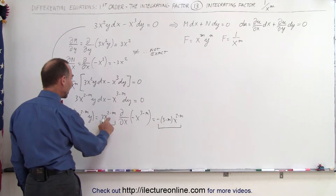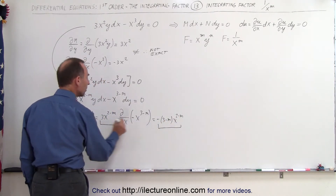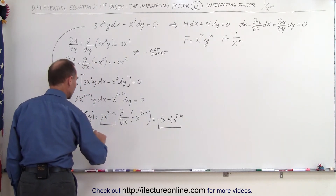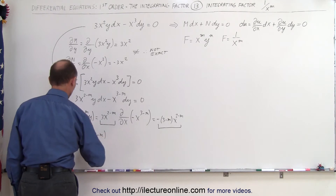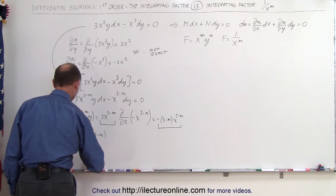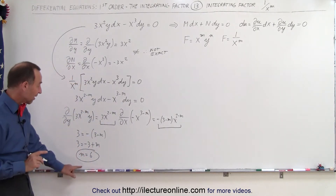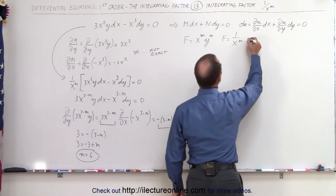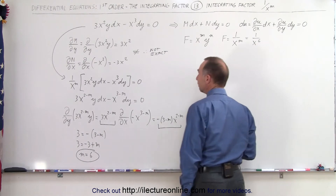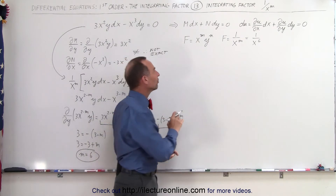Notice that in both cases we have x to the 2 minus m, which means that 3 must equal minus the quantity 3 minus m. So 3 equals minus 3 plus m, which means m equals 6. Our integrating factor for this differential equation is therefore 1 over x to the 6 power. Let's go ahead and use that — we should get the exact same result as the previous video.